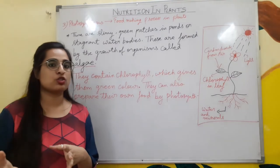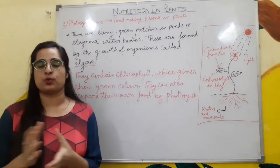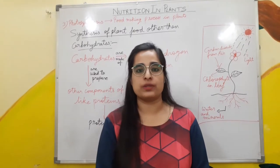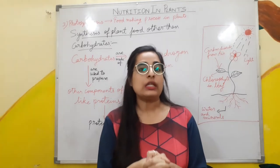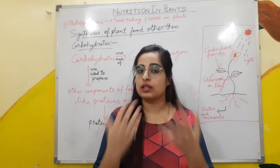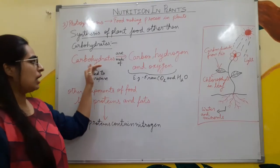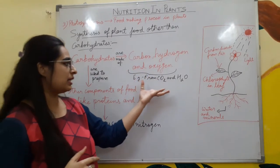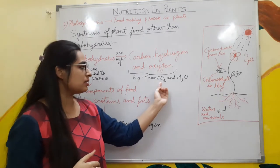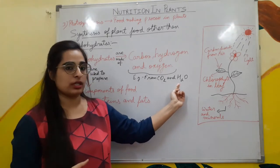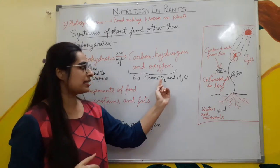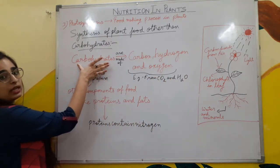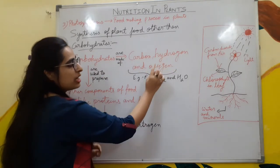You can write these points as notes in your notebook. We just saw that plants prepare carbohydrates as food. Carbohydrates are made of three elements: carbon, hydrogen, and oxygen. In their preparation, carbon dioxide (CO2) is required and water (H2O) is required. Carbon is present in CO2, oxygen is present in CO2, hydrogen is present in H2O, and oxygen is also present in H2O. That is why when plants prepare carbohydrates, these carbohydrates have three elements: carbon, hydrogen, and oxygen.